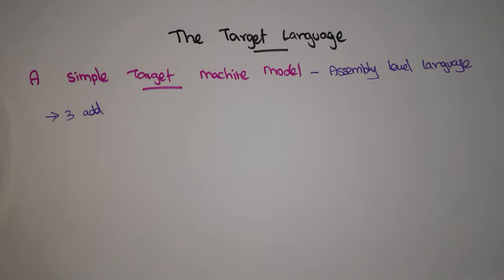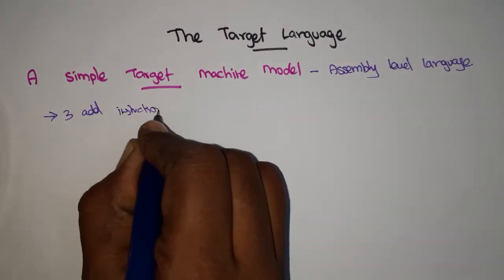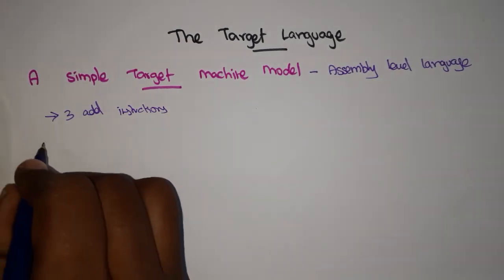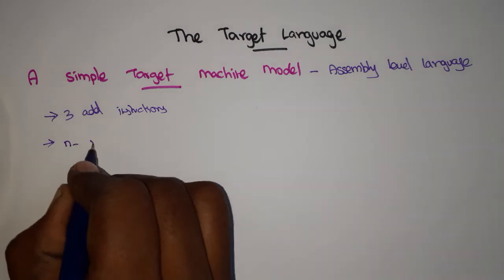A three-address statement is one where in a single line of statement at most three addresses are referenced. For example, x = y + z — x, y, and z are memory locations where variables are stored. At most, a statement can have three addresses, and that is called a three-address instruction.